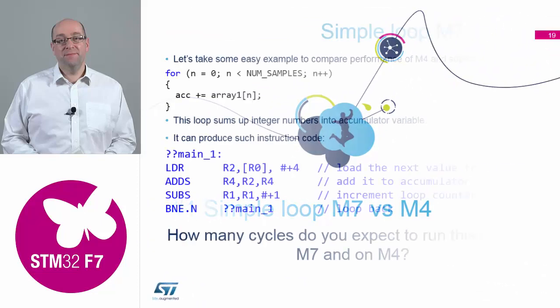So now we're going to go into example number one, where we're going to analyse a very simple loop. What we're going to do in the loop is accumulate or sum up the elements of an array. It's a fairly simple, compact loop. When you generate your code, it should pretty much come down to those four instructions: your load, your add, your sub, and then the branch instruction to loop back to the start again.